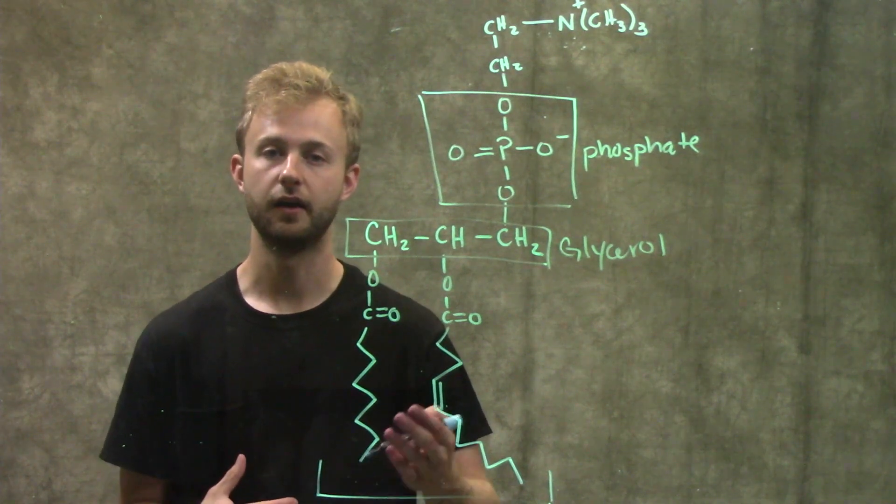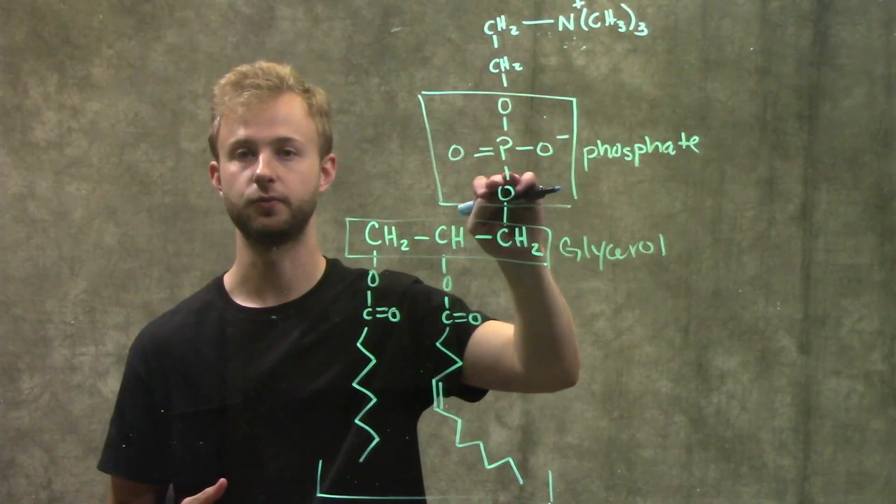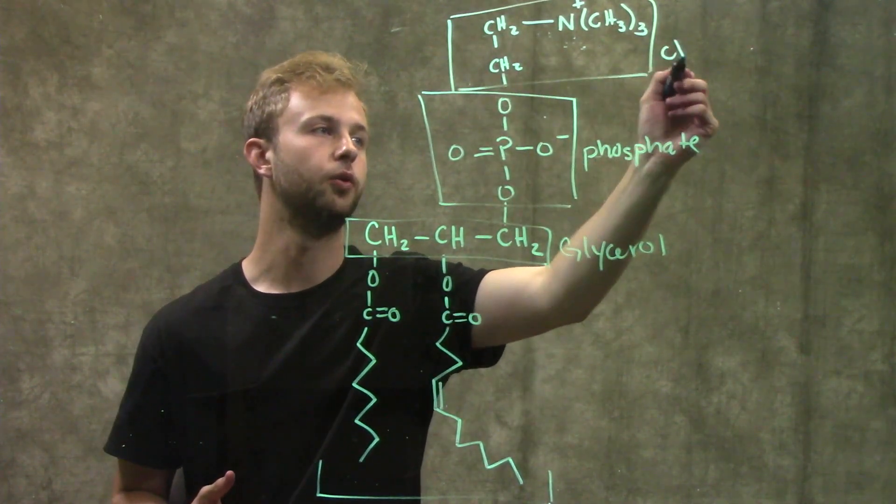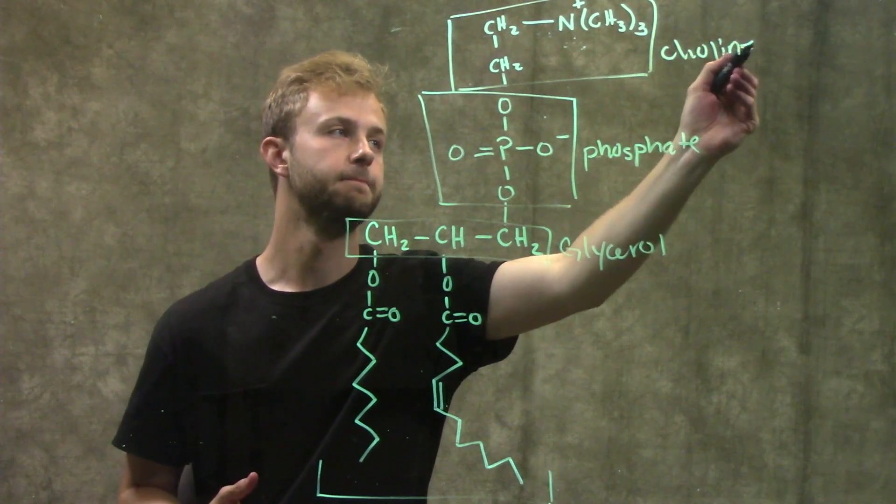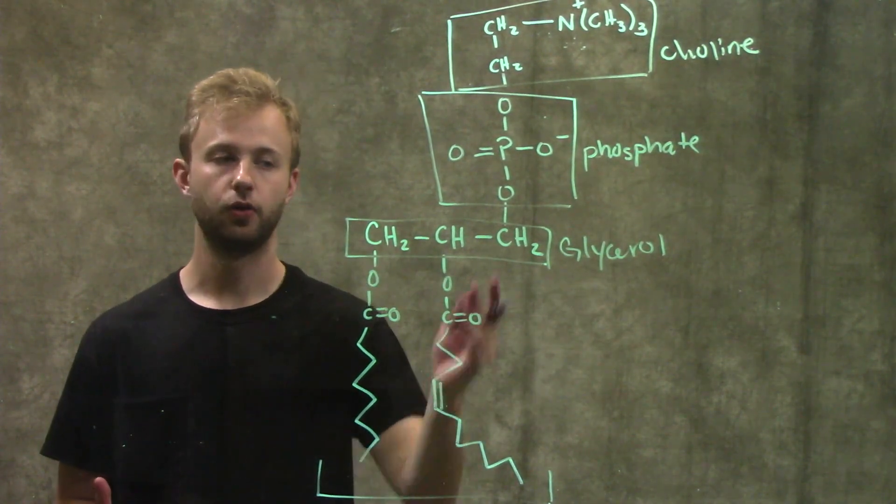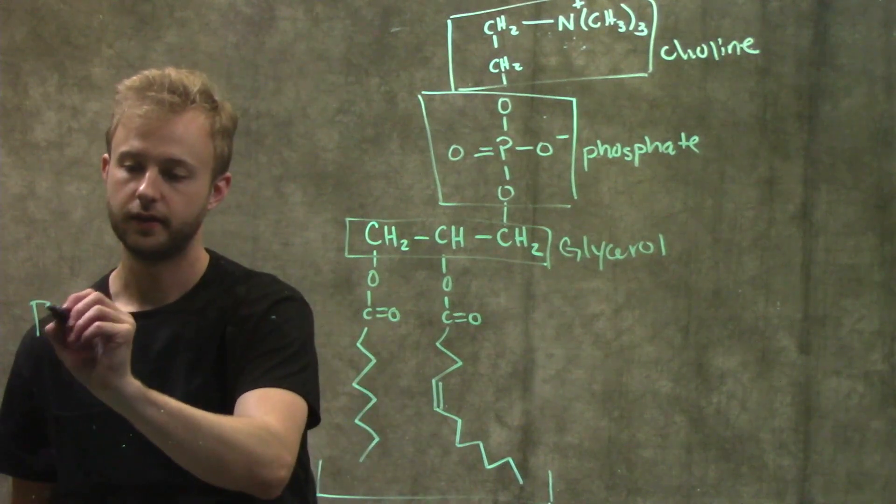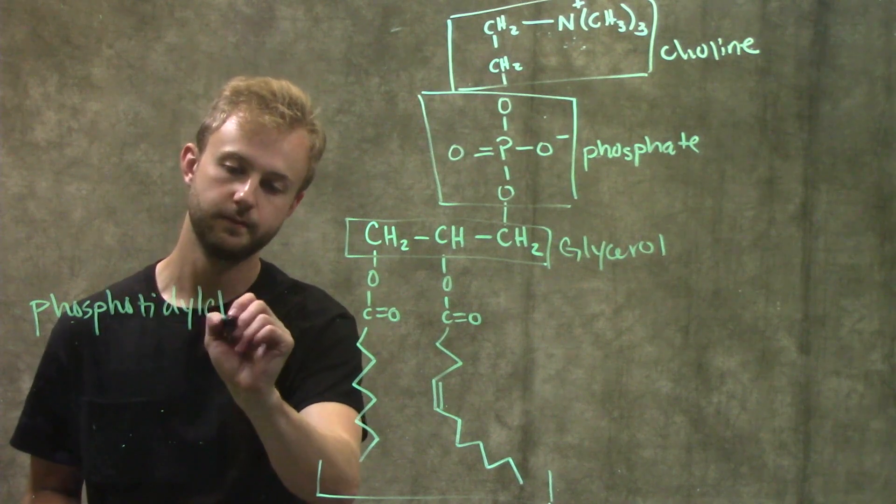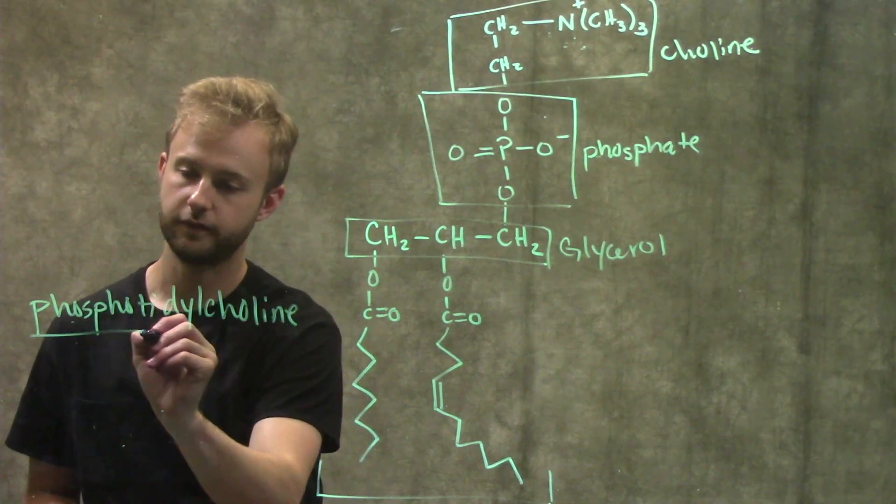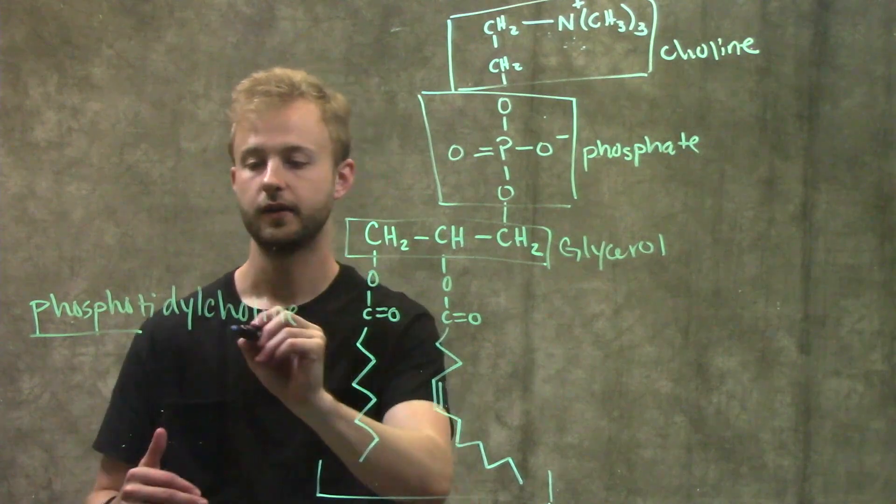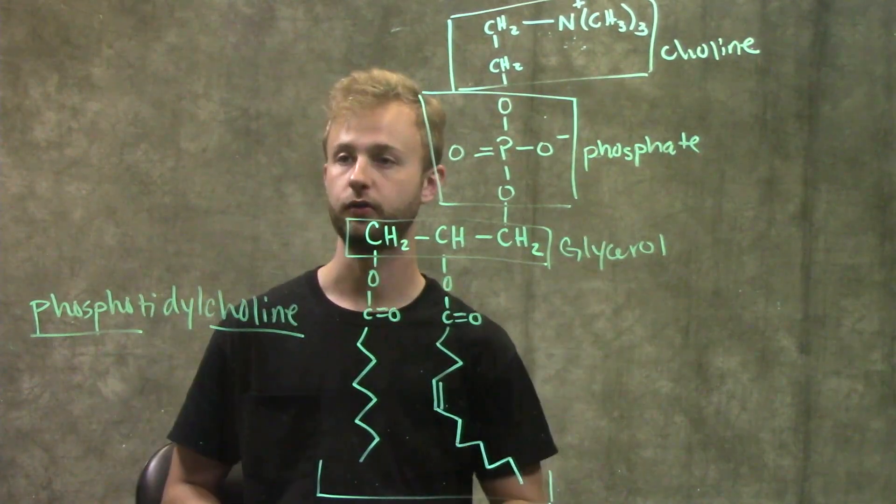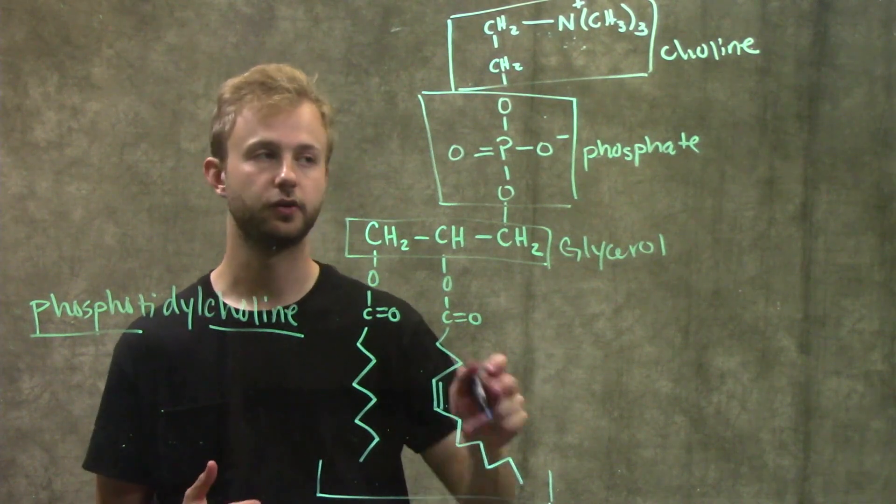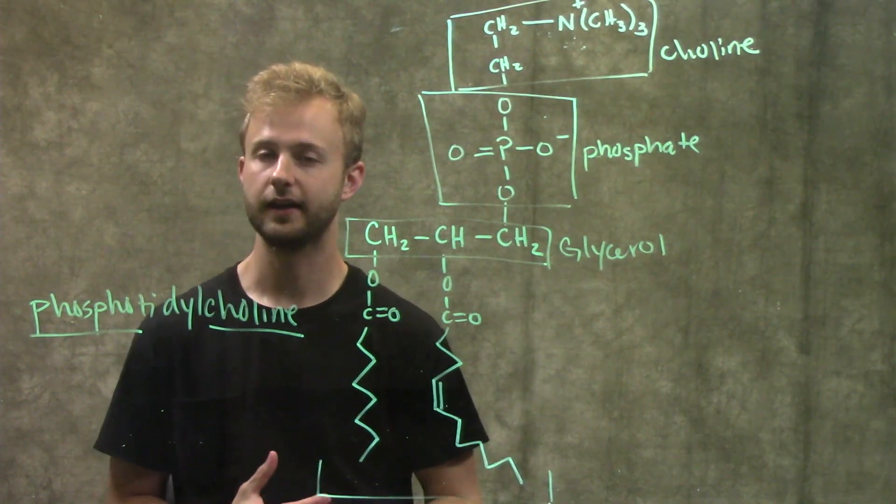So second point of diversity in phospholipids is what's attached to this phosphate group. So in this case this group right here is called a choline and so this whole phospholipid is going to be called a phosphatidylcholine. So here we have the phospho which is a phosphate group and then the choline from that choline group. And so something that's really important about phospholipids regardless of whether it's phosphatidylcholine or some other kind of phospholipid is that phospholipids have two distinct regions.